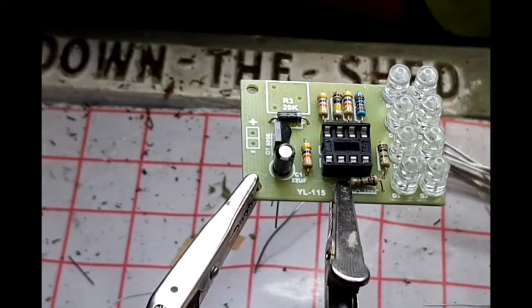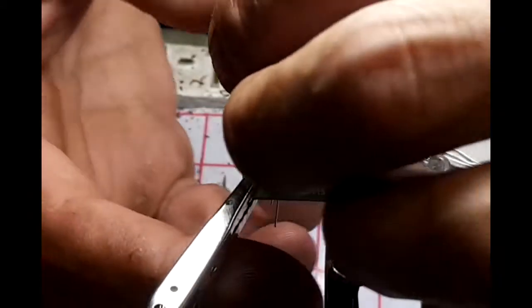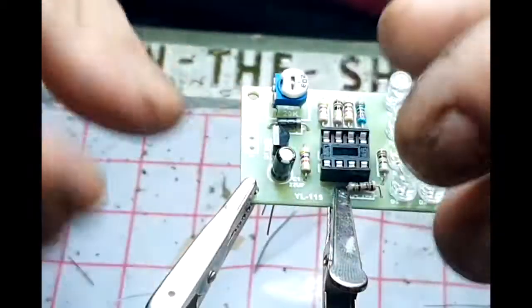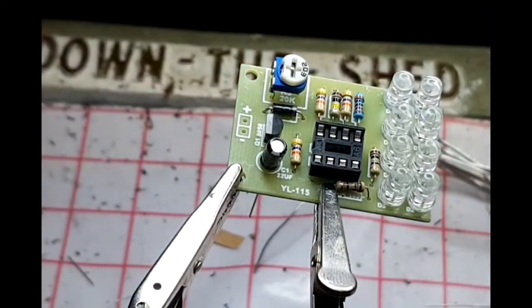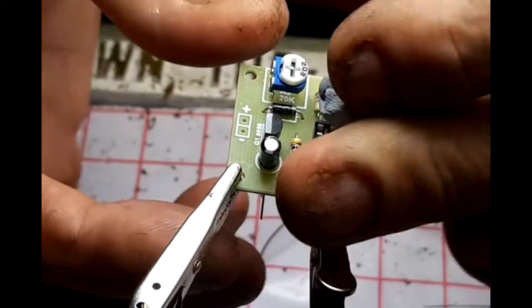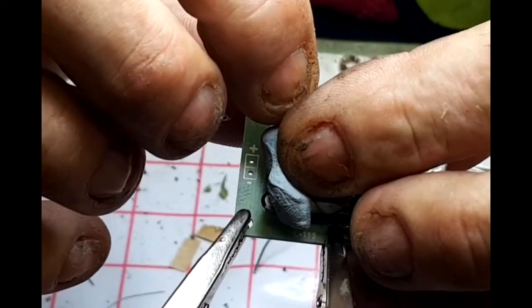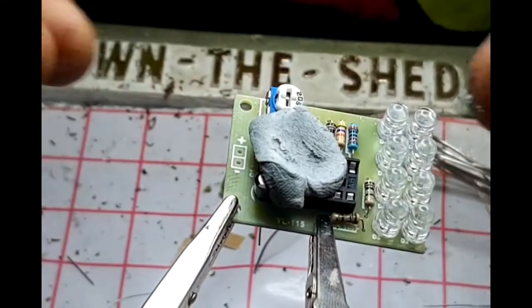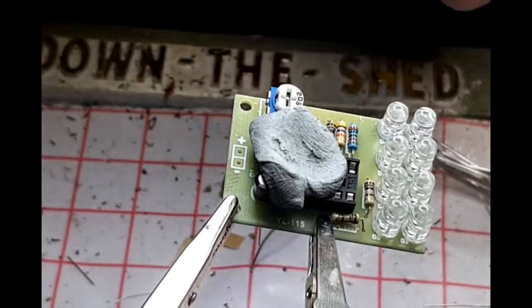Since we're here we may as well put the variable 20k resistor in. This is obviously going to adjust the flash rate for the lights whatever they're doing. We can drop this power point on as well.